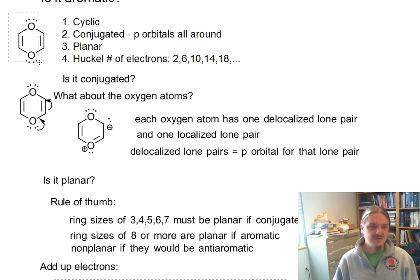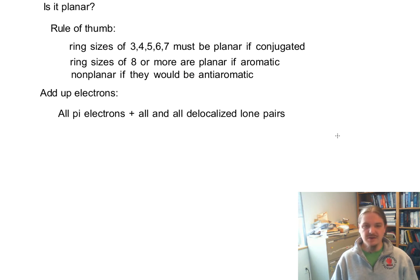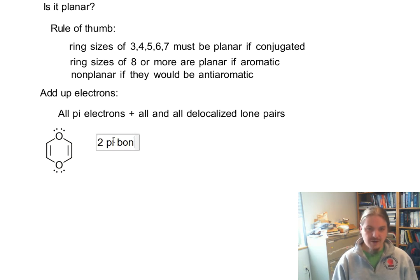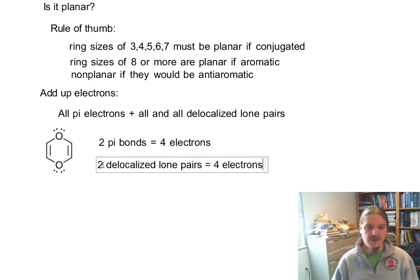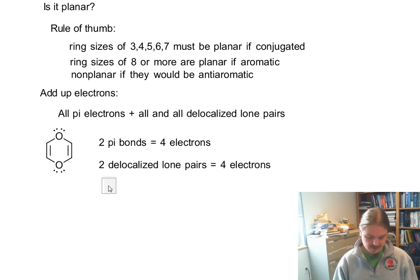And so this structure, we appear to have two pi bonds, which is four electrons. And we have two delocalized lone pairs, four electrons. We add all of that together. You have eight electrons total.